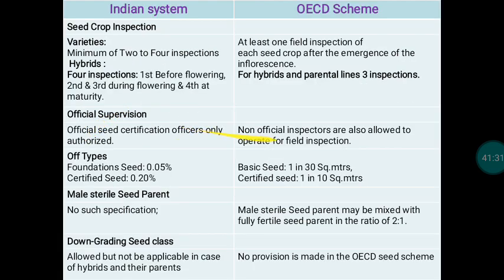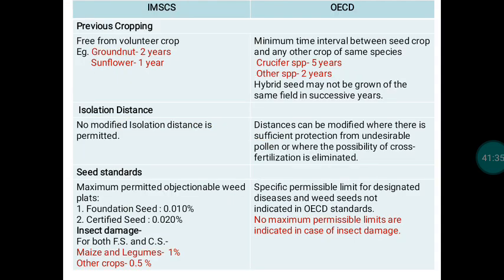Regarding isolation distance: in IMSCS, a specified isolation distance must be strictly followed. Under OECD schemes, isolation distance can be modified, but sufficient protection from undesirable pollen or other possibility of cross-fertilization must be ensured — there are no hard and fast isolation distance rules, but adequate protection is mandatory. Regarding weed standards: in IMSCS there is a maximum permissible limit for objectionable weed plants — for Foundation Seed 0.01% and for Certified Seed 0.02%. For insect damage, in maize and legumes the maximum permissible limit is 1%, and for other crops 0.5%. No such maximum permissible limits for insect damage exist in the OECD scheme.